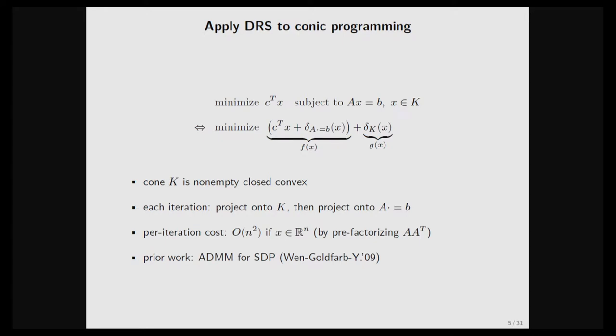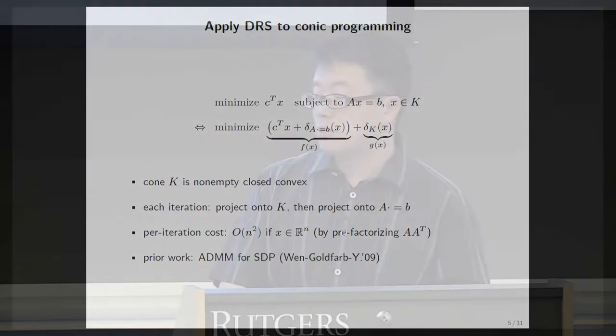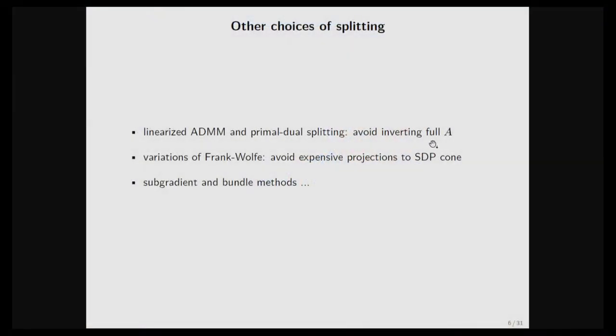It took us a fairly long time to realize this algorithm is very easy to parallelize. There are other choices of splitting: if you do not want to invert A-transpose A, you can apply linearized ADMM or primal-dual splitting. If you want to avoid the expensive projection to a semidefinite cone, you can apply a recent variation of Frank-Wolfe, among many other algorithms.